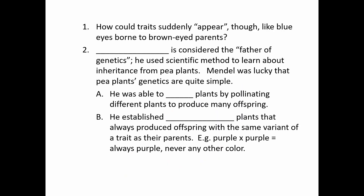But there was a big question that could not be answered by either of those previous ideas — basically, how did some traits suddenly appear? Like if you have a child with blue eyes and both of the parents have brown eyes. The person who really addressed that question was Gregor Mendel.